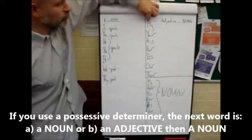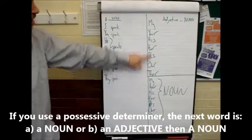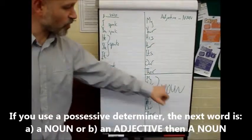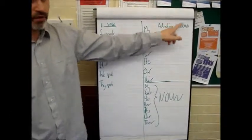If you use my, your, his, her, its, our or their, next word is either a noun or an adjective and then a noun. Because today we are doing adjectives.